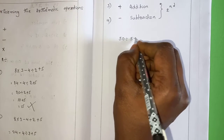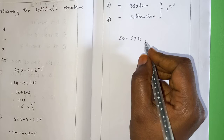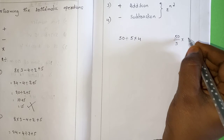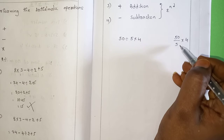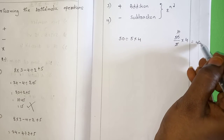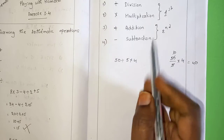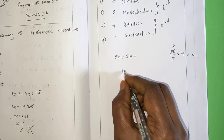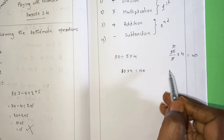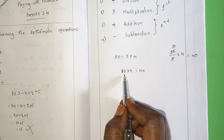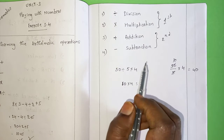Consider 50 ÷ 5 × 4. If the expression is written as 50 ÷ 5 × 4, you can do 5 ones are 5, and 10 fours are 40. But if division and multiplication appear together, first do the division, then multiplication. You have to follow the priority rule: do division first, then multiplication.